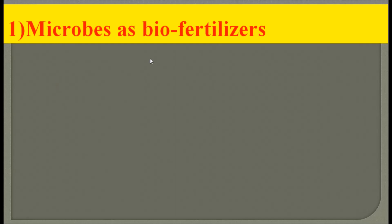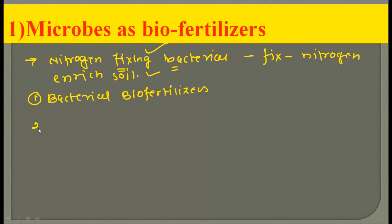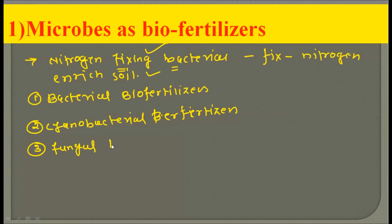The next application is microbes used as biofertilizers. Microbes used as biofertilizers are primarily nitrogen-fixing bacteria which fix atmospheric nitrogen and enrich the soil, thereby increasing the productivity of the soil. Nitrogen-fixing bacteria can be broadly classified into three categories: bacterial biofertilizers, cyanobacterial biofertilizers, and fungal biofertilizers.